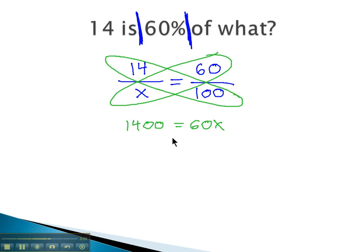we simply have to divide both sides by 60, which tells us that x is equal to 23.3 approximately, rounding to one decimal point.